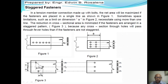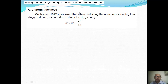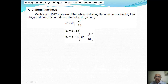In the staggered arrangement, the deduction is d prime, which is less than dh. In 1952, Cochrane proposed that when deducting the area corresponding to a staggered hole, use a reduced diameter d prime given by: d prime = dh − s²/4g. So d prime is less than dh because you subtract s²/4g from dh.